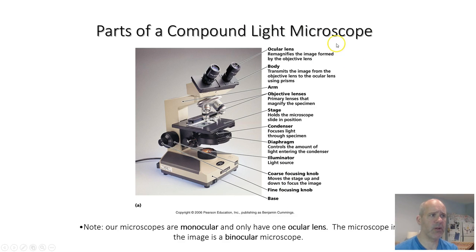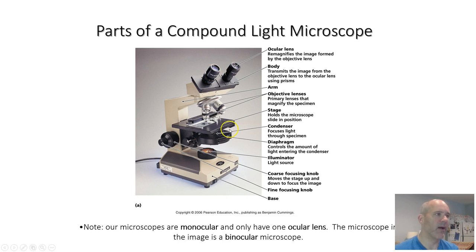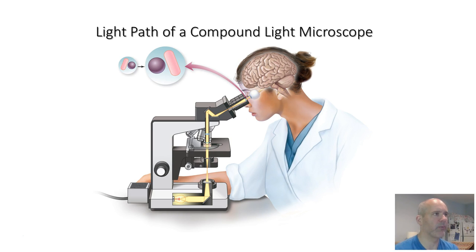The other parts of the microscope, you're going to learn about those in your LearnSmart Labs activities. Monocular versus binocular microscopes refers to the oculars. If you've got two, it's binocular. If you only have one, it's a monocular microscope.